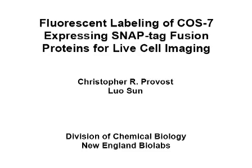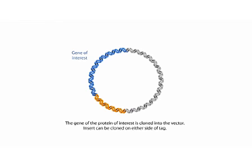SNAP and CLIP-TAG protein labeling systems enable the specific covalent attachment of virtually any molecule to a protein of interest. The gene of interest can be cloned into the vector on either side of the tag.